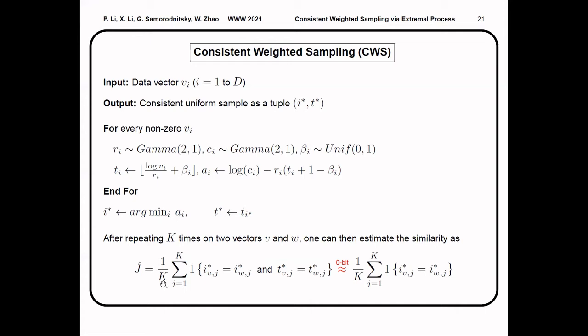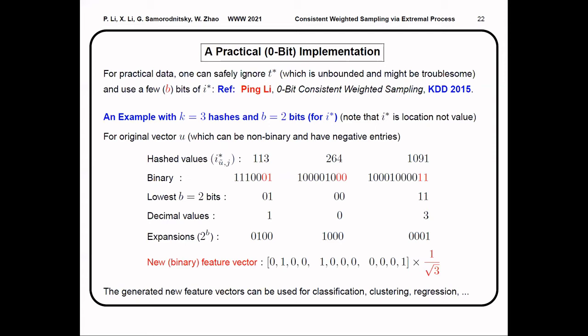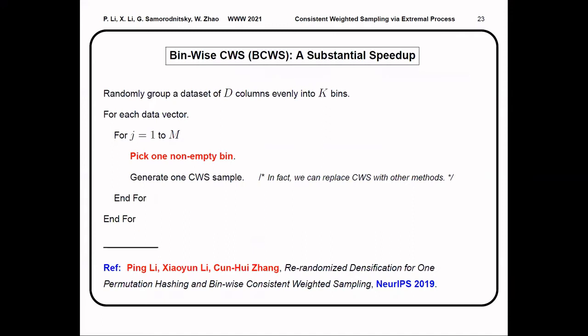Note that the standard estimator requires that both hash samples to be the same. And in practice, one can safely ignore the second hash sample t* and only use the b bits to represent the first hash sample i*. We can only store the last b bits of i* and then transform each data sample into a binary feature vector. Then we can use this new feature vector for classification, regression, and et cetera.